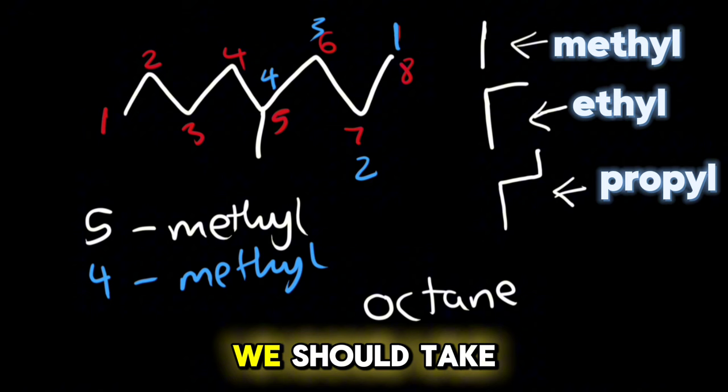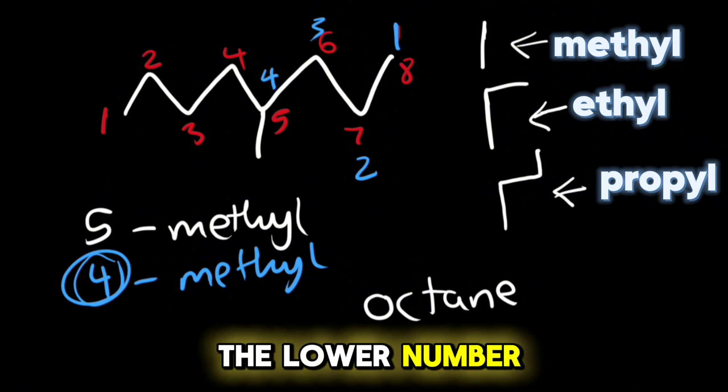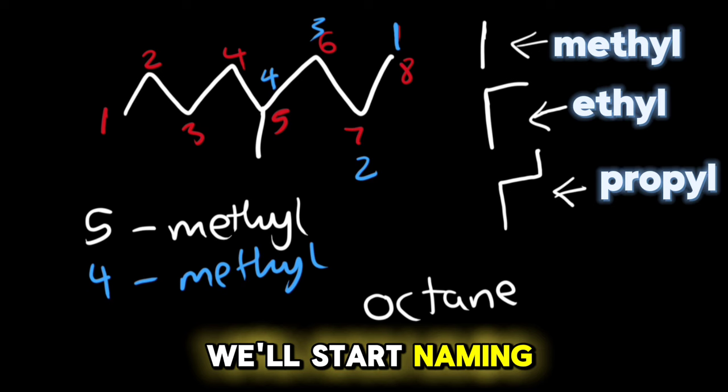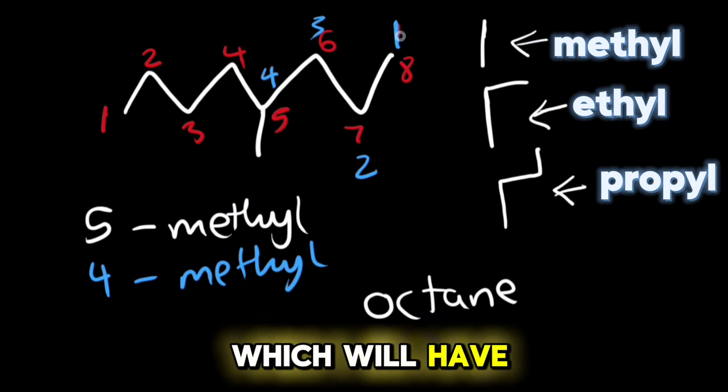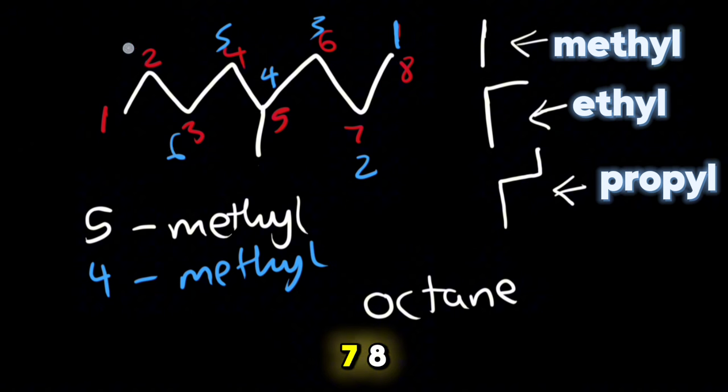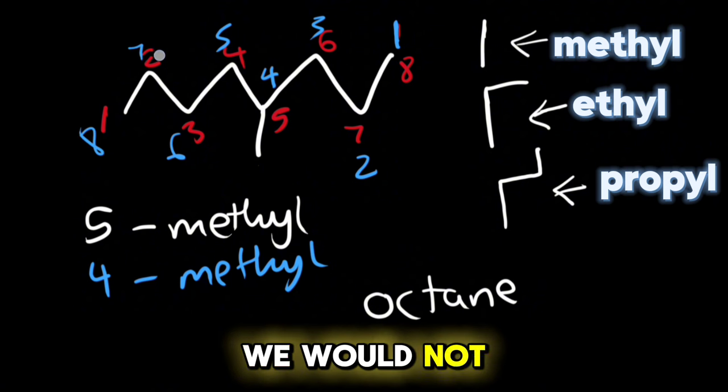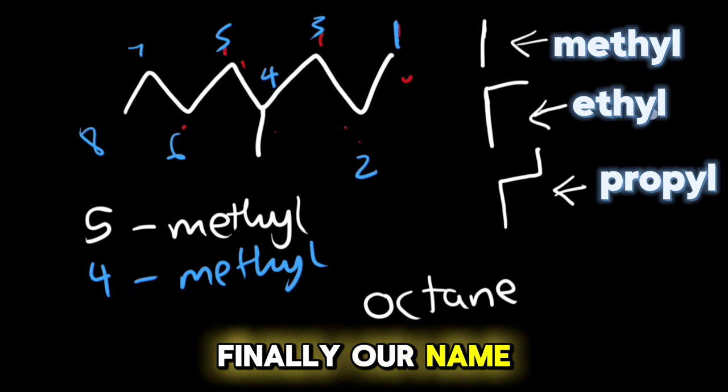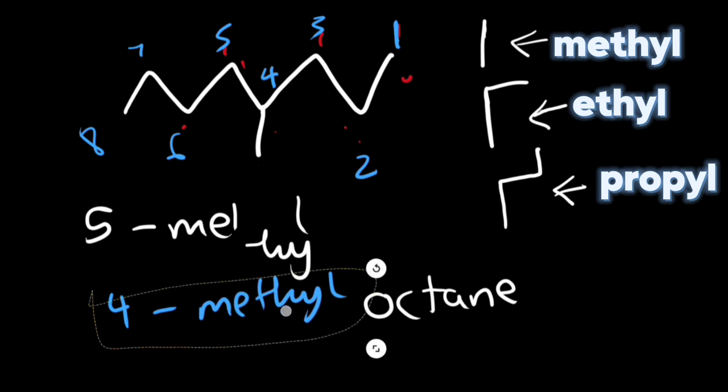Which one should we take? We should take the one with the lower number. Because we have four as the lower number, it means that we'll start naming from the right to the left. We'll have here one, two, three, four, five, six, seven, eight. We will not consider these red numbers. Finally, our name will be 4-methyloctane.